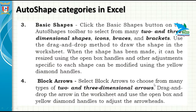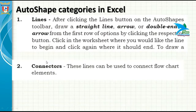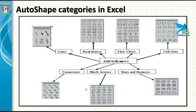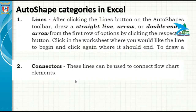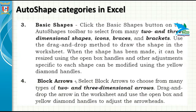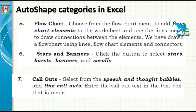Block Arrows: select a block arrow to choose from many types of two and three-dimensional arrows. With the help of this option you will be able to draw arrow shapes on the body of a worksheet. Different types of arrows are available in auto shapes.